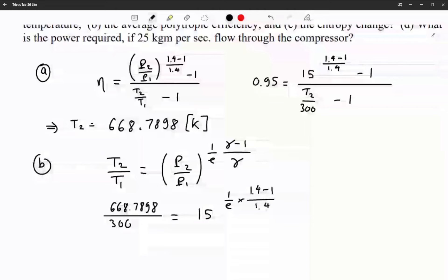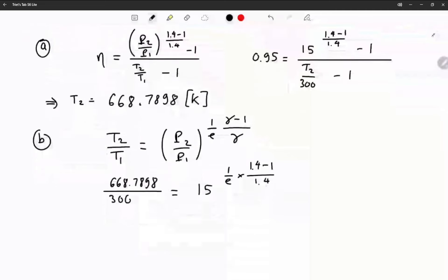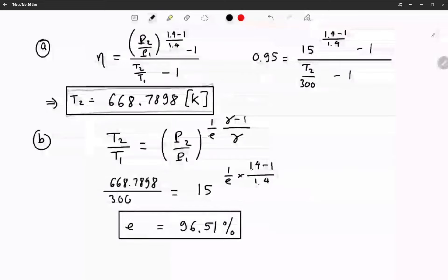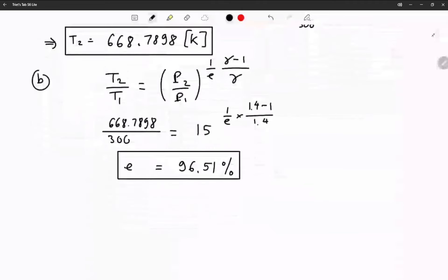And I'm gonna get efficiency of 96.51 percent. That's my efficiency. Let me box that, let me box this as well. And then for c, we solve for the entropy.